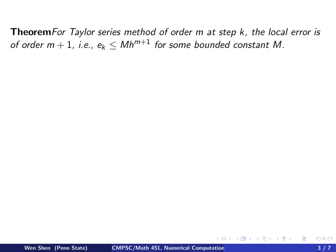We have the following theorem. For Taylor series method of order m at step k, the local error is of order m + 1. That is, eₖ is bounded by M times h to the power m + 1, where M is some bounded constant. We must also stress that this theorem holds for f smooth. That is, all the partial derivatives for f exist and are bounded.